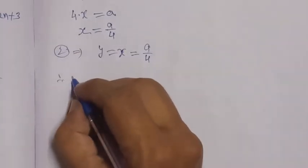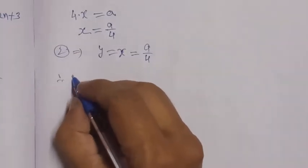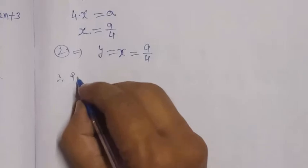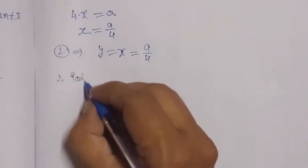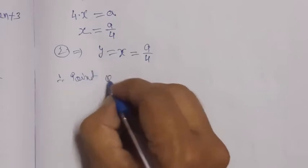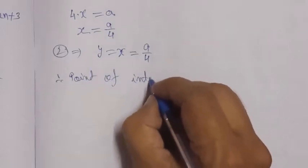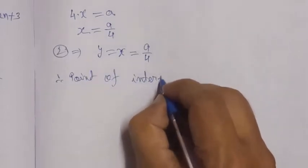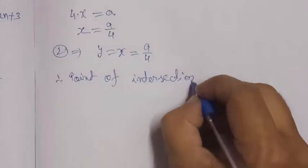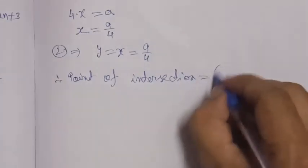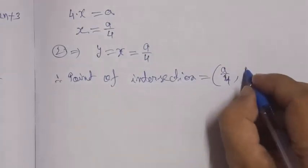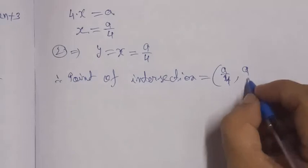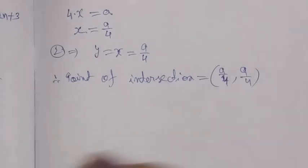The intersecting point of the curve and the line is confirmed. The x value is a/4 and the y value is a/4. This is our point of intersection.